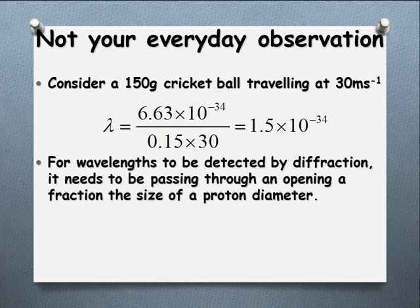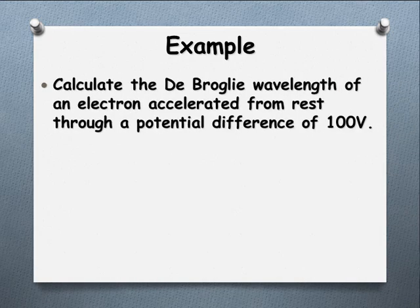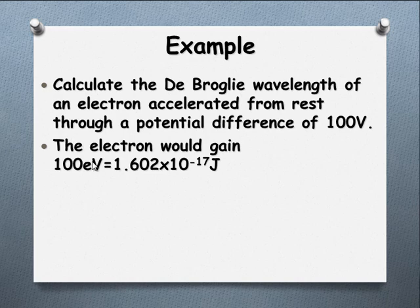Let's have a look at an example where we might be able to make such an observation. We call this the de Broglie wavelength — any time you see de Broglie wavelength, we're talking about the wavelength of a particle. We have an electron accelerated from rest through 100 volts. How much potential energy is this going to gain, or how much potential energy is there that's going to be converted to kinetic energy?